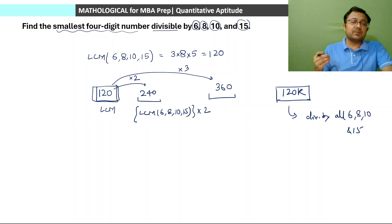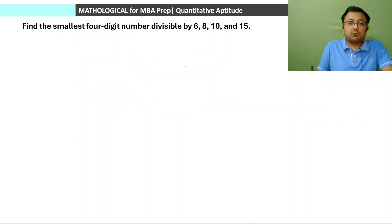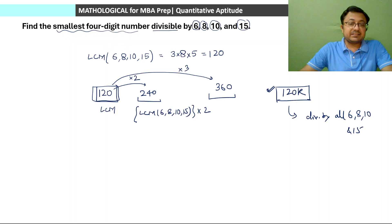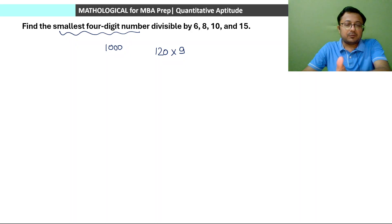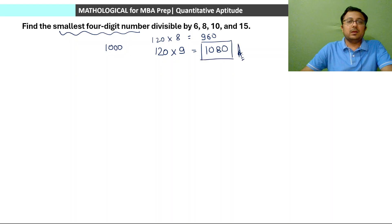What will be the smallest 4-digit number? The number must be of the form 120K, but we need the smallest 4-digit number. The smallest 4-digit number is 1000. So our number should be close to 1000. If you multiply 120 by 8, that is 960 — less than 1000, not a 4-digit number. If you multiply 120 by 9, that is 1080. So the smallest 4-digit number divisible by all is 1080.